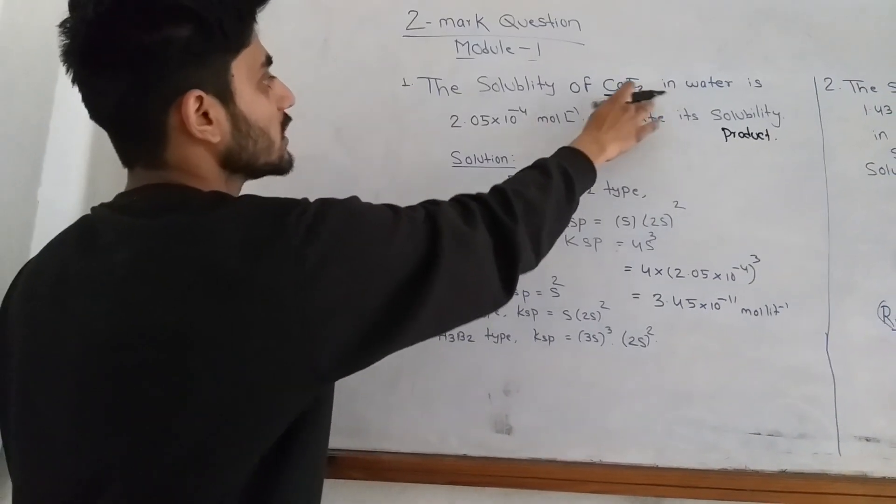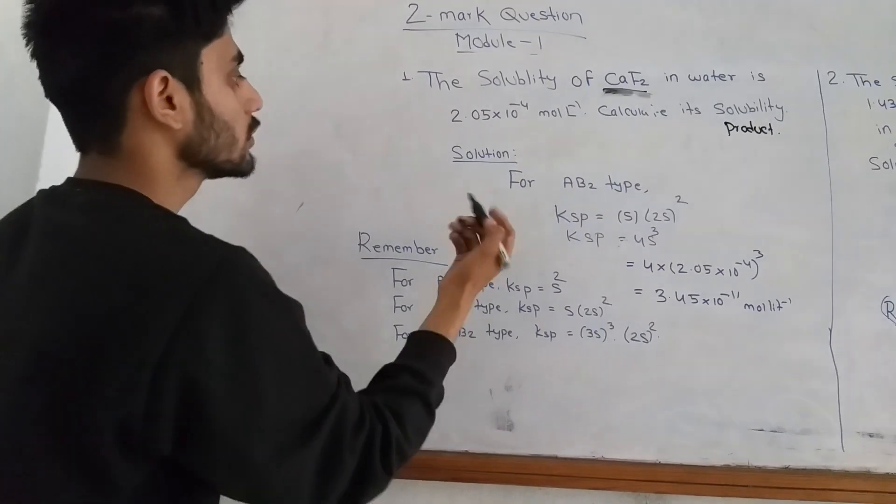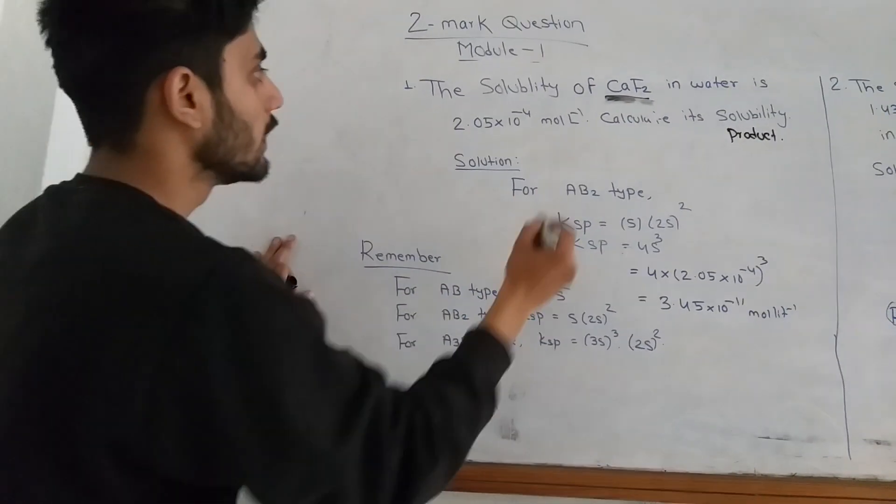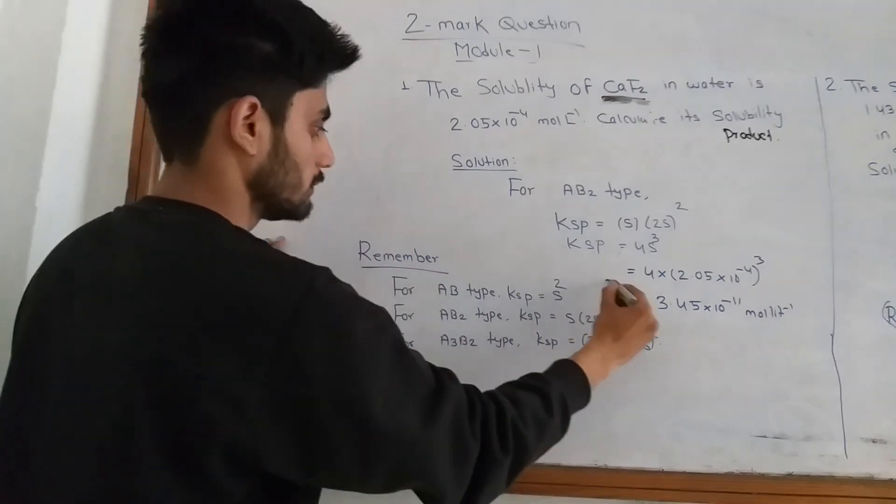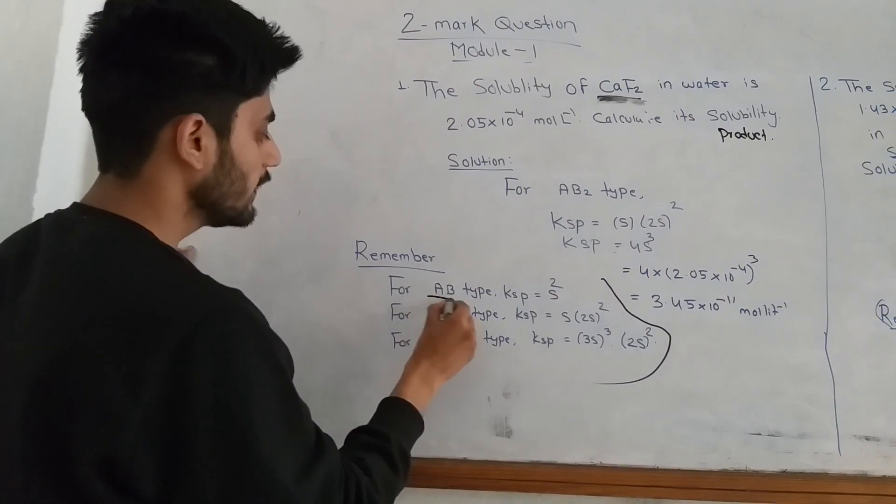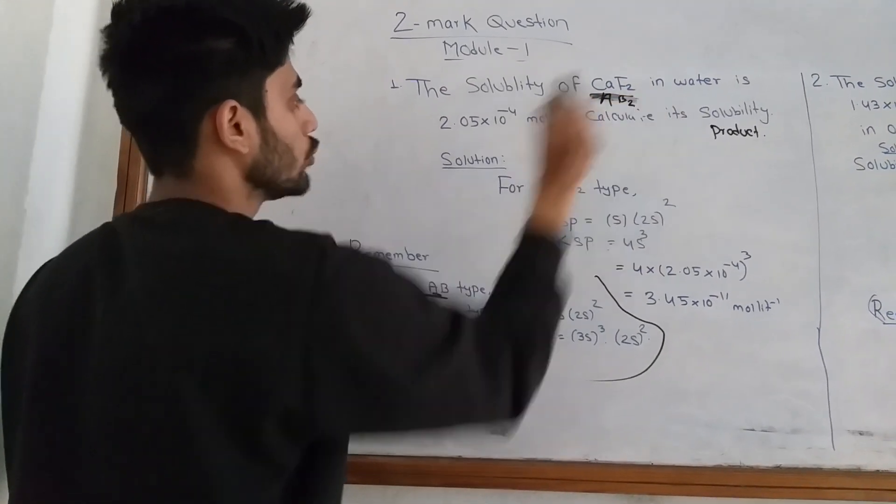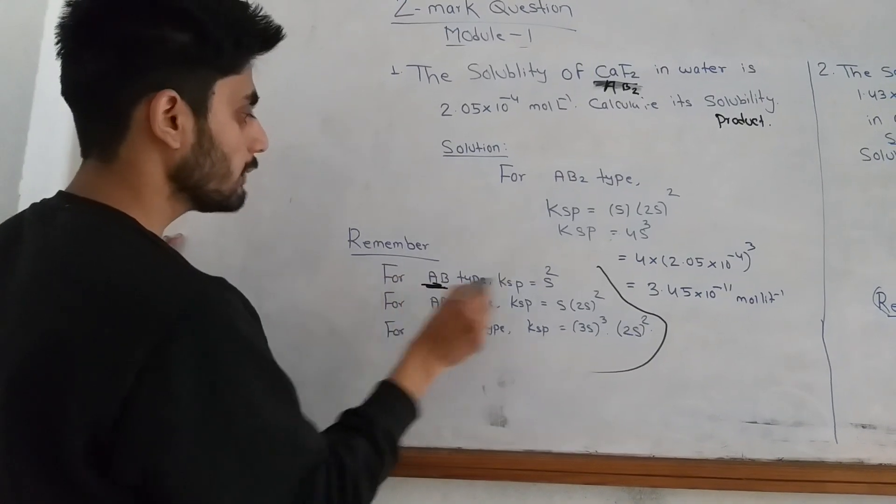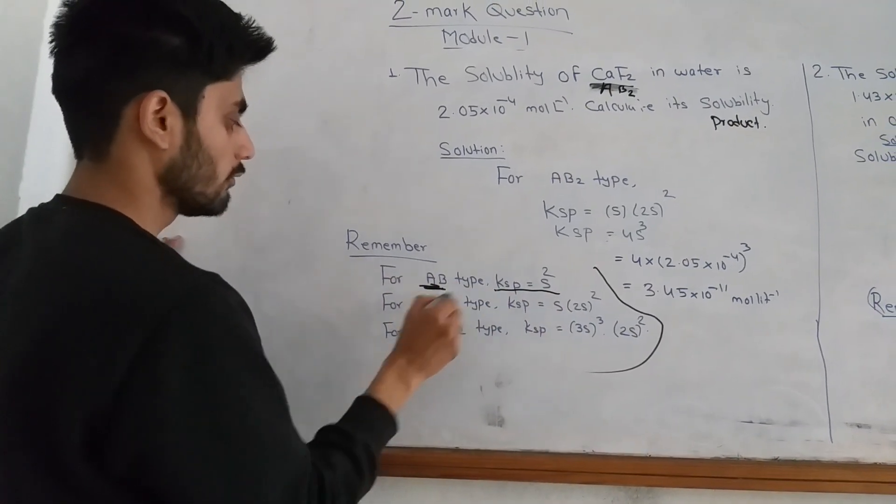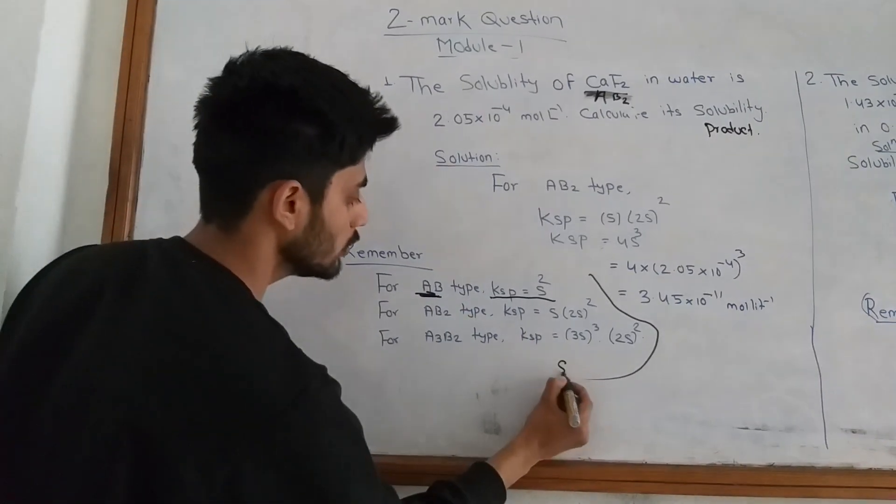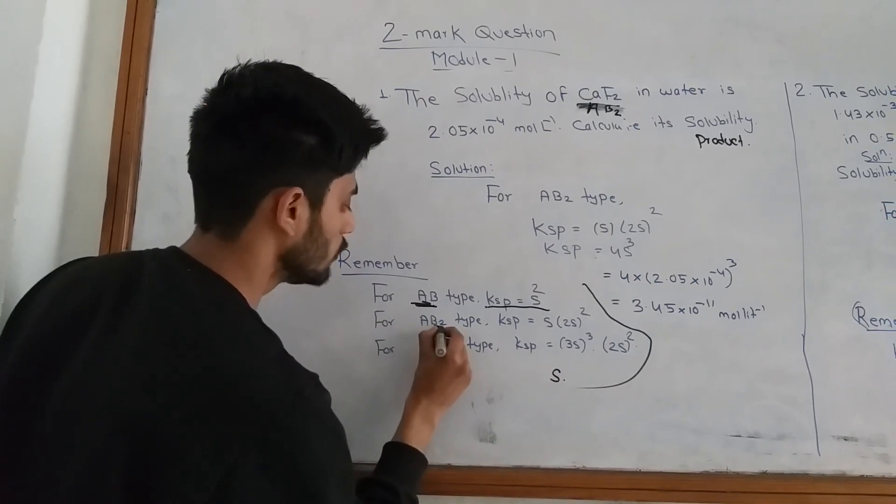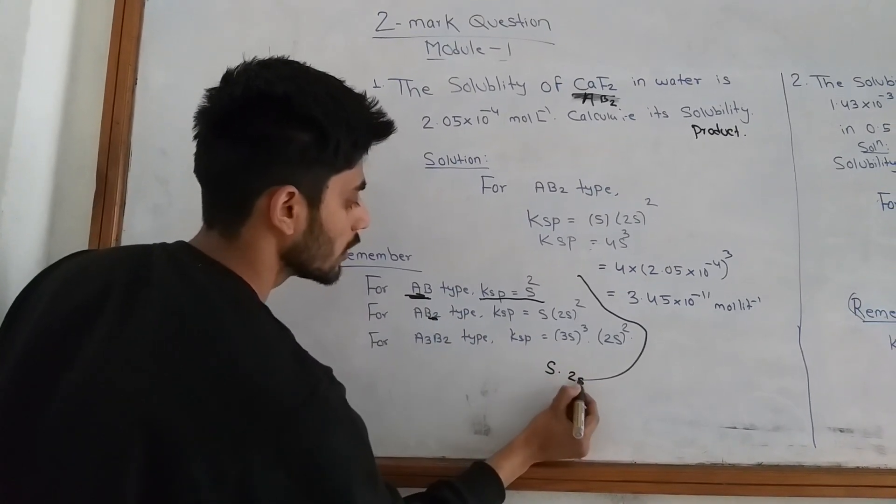This is the same method. KSP for AB type: for AB type, KSP is S squared. For AB2 type, S into 2S. This is 2S, so this is 2S squared, which is 4S cubed. This is S into 2S squared.